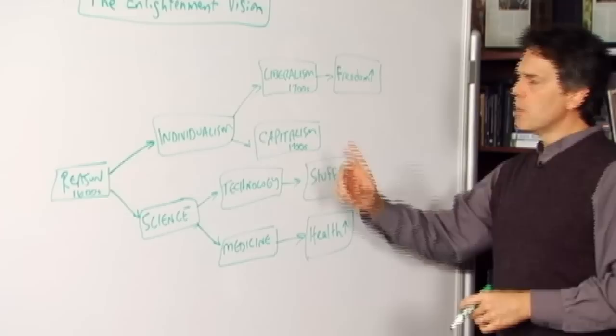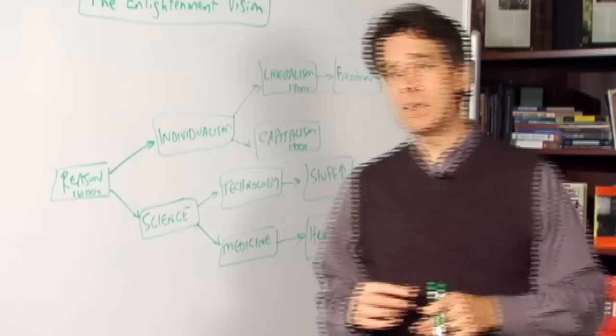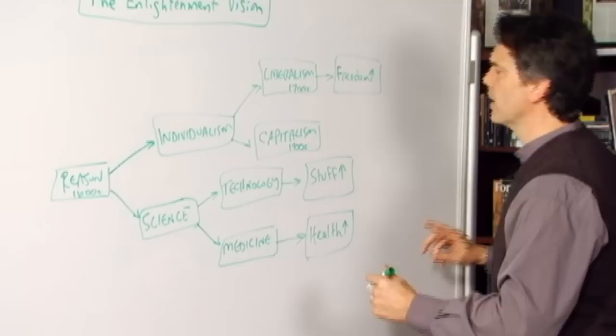But also in 1776, the first kind of modern treatise on capitalist free market institutions, Adam Smith's Wealth of Nations, is published. 1776 then is a banner year here.